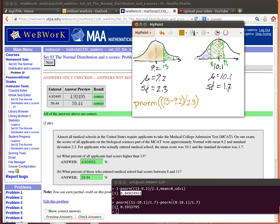Then minus the P-norm of 8 minus 10.1 divided by 1.7, that's going to tell us that blue area. So if we took the brown area minus the blue area, we'd have that area right there, which is what we're looking for.